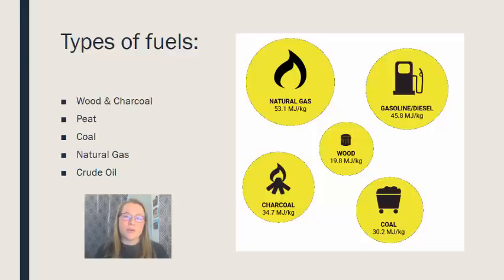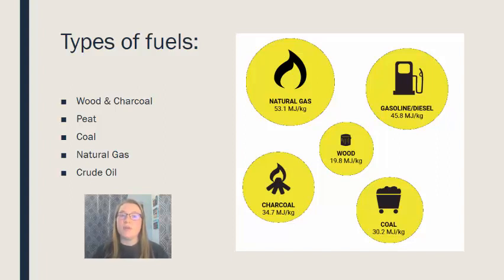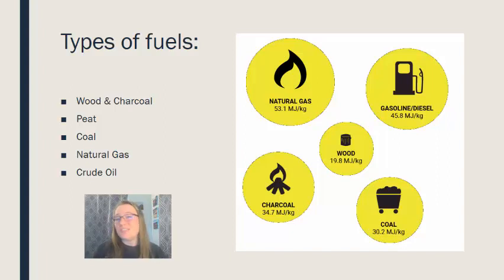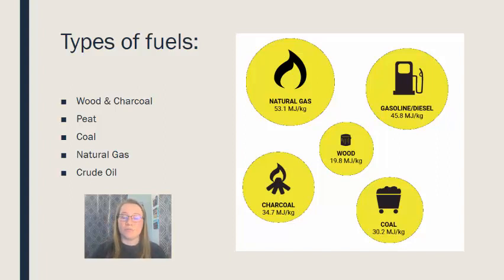The fuel types we are going to discuss include wood and charcoal, peat, coal, oil, and natural gas. Coal, oil, and natural gas are all fossil fuels and would be considered non-renewable resources. Wood, charcoal, and peat are technically classified as renewable resources. However, in order to be truly renewable they do need to be managed appropriately, because overuse of any renewable resource can turn it into a non-renewable resource if it's used faster than it is replenished.